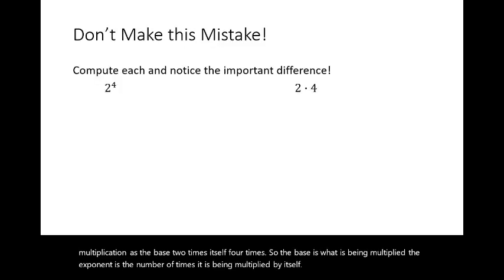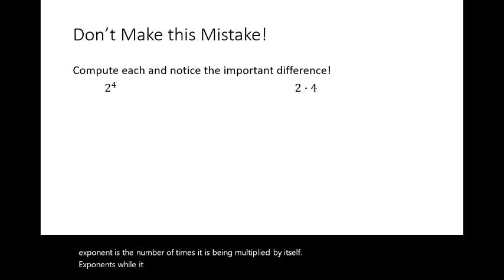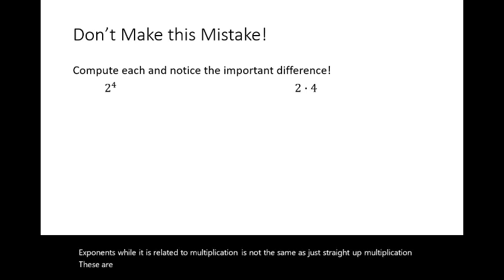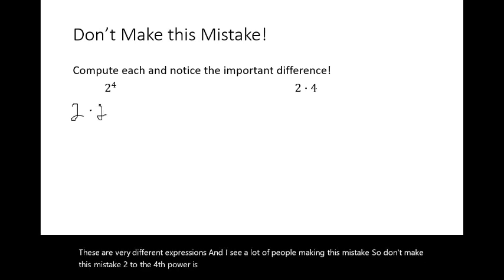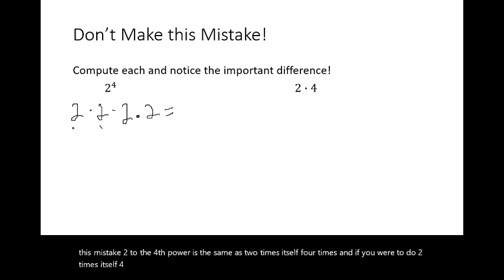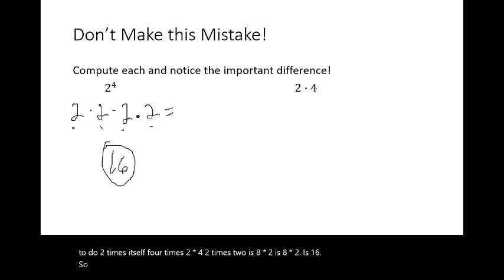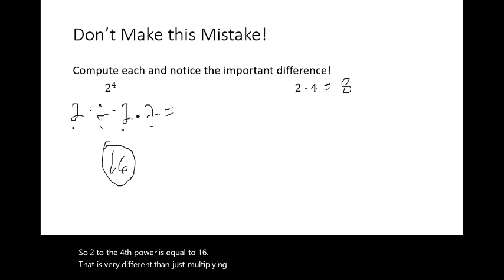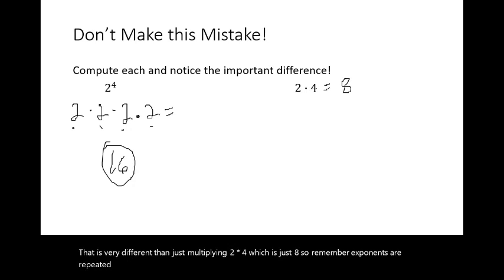Now, exponents, while related to multiplication, are not the same as just straight-up multiplication. These are very different expressions, and I see a lot of people making this mistake. Two to the fourth power is the same as two times itself four times: two times two is four, four times two is eight, eight times two is sixteen. So two to the fourth power equals sixteen — that is very different than just multiplying two times four, which is eight. Remember, exponents are repeated multiplication, not just regular multiplication.